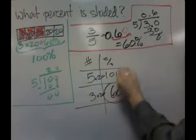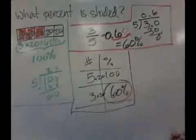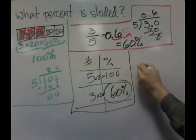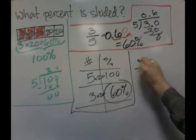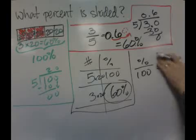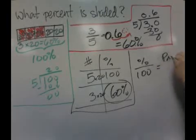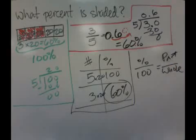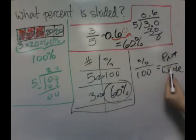So the answer is 60%. There's a bazillion different ways to solve it. I'm going to do a fourth one really quick. A lot of people do percent over 100 is equal to the part over the whole.